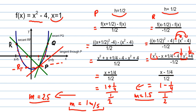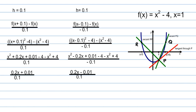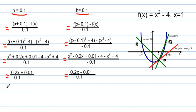The next step is h equals 0.1, which is relatively small. Using the same function formula and substitution, you get one slope value from the right interval, call it m1, and a second value from the left interval, call it m2. When you find the average of m1 and m2, you always get 2. This confirms that the rate of change when x equals 1 is consistently 2.